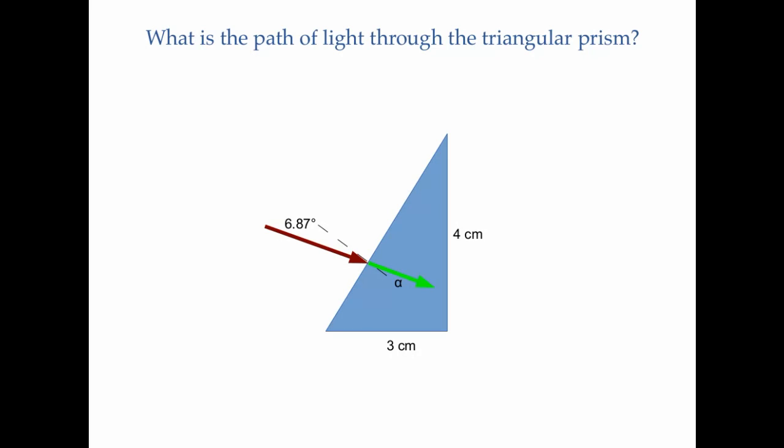So simplifying the diagram a little bit, now we can solve for angle alpha. That's the angle of the light going into the prism. Snell's law is n1 sine theta 1 equals n2 sine theta 2. 1 times sine of 6.87 must equal 1.5 times the sine of alpha. And alpha is 4.57 degrees.